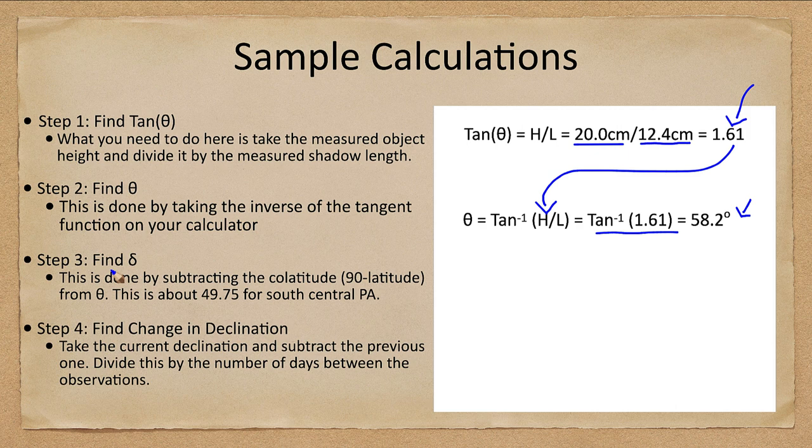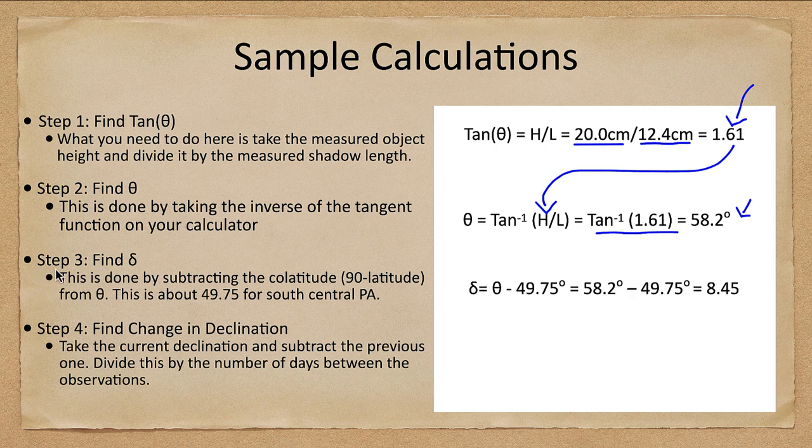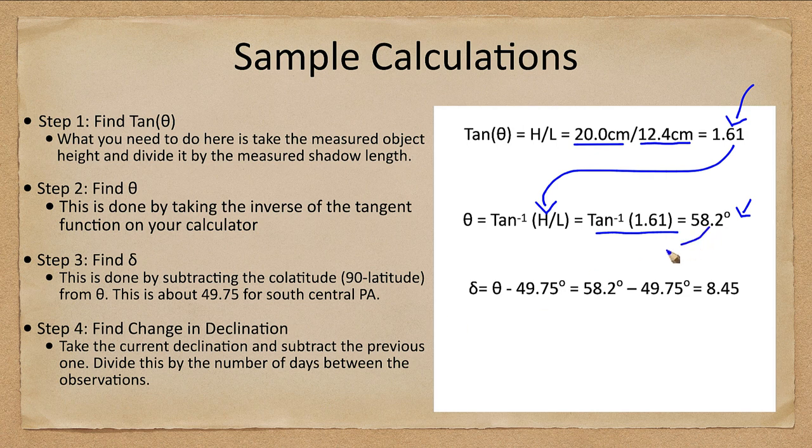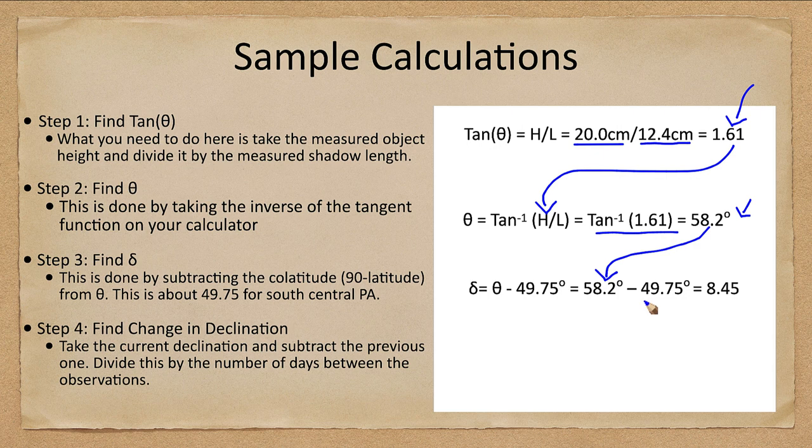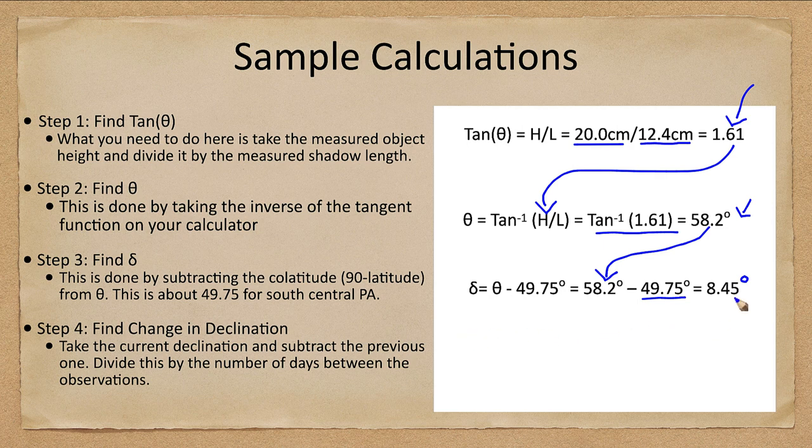You'll notice that in the fall semester, the sun will continually get lower and lower. If you're in the spring semester, it will get higher and higher over the course of the semester. Now we want to find the declination. Just as before, we take that 58.2 and subtract 49.75 to get 8.45 degrees. So the declination of the sun is 8 degrees compared to 11 degrees the previous time. Again, the sun is getting lower and lower, getting closer to the celestial equator.